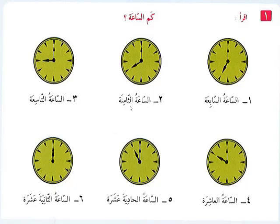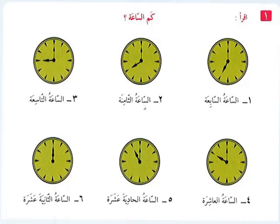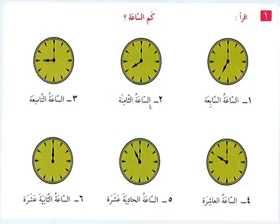Al-sa'atul taminat — 8 o'clock. You will ask: kamis-sa'atul an? What is the time right now? You give the answer in Arabic: al-sa'atul an, al-sa'atul taminat. It is 8 o'clock.